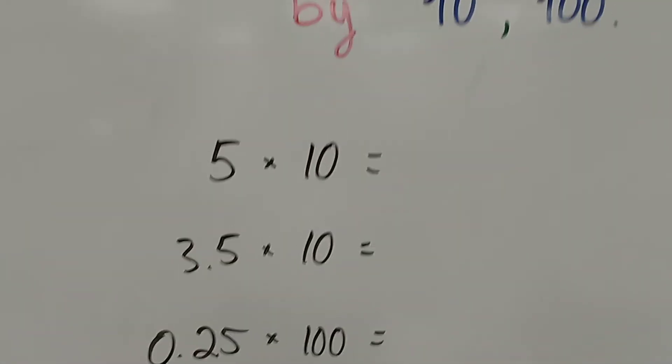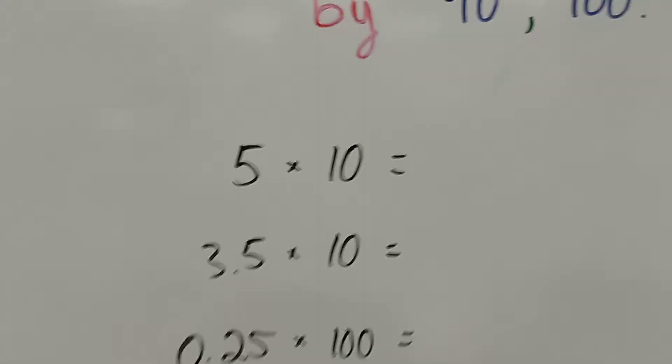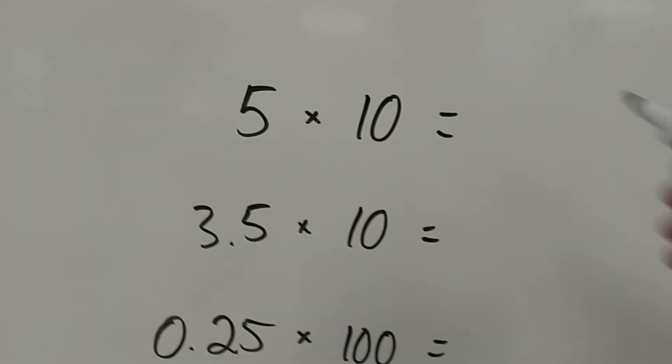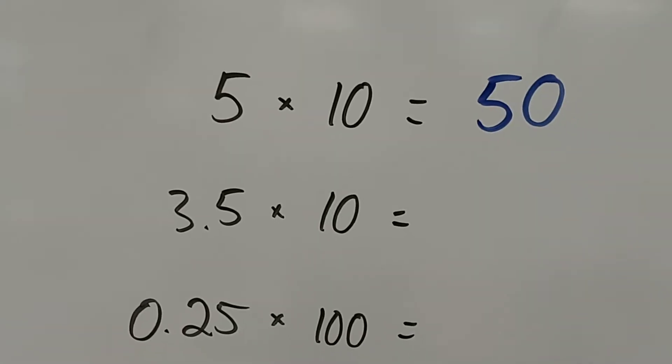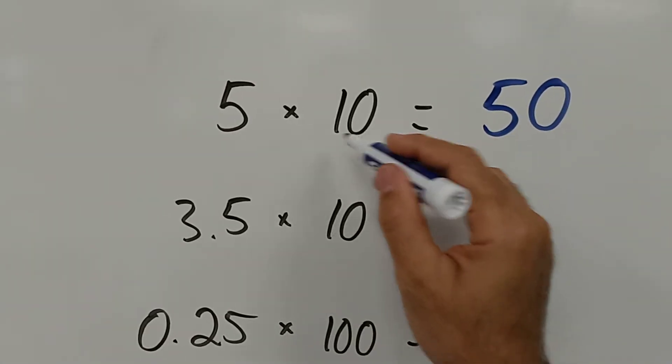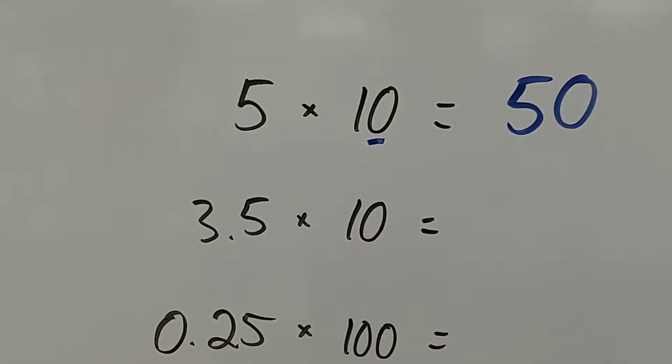We have here 5 times 10. You already know it's 50, right? What we did was add this 0 here to the right of the 5.